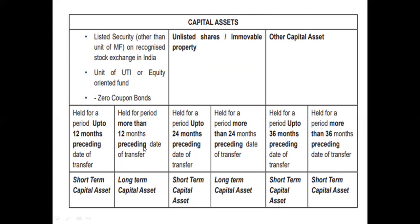If the holding period is more than 12 months prior to the date of transfer, it is long-term. For unlisted shares or immovable properties, if the holding period is up to 24 months, they are known as long-term capital assets. For other assets, if held for up to 36 months they are short-term; if held for more than 36 months they are treated as long-term capital assets. Thank you very much, I hope you understand all these things.